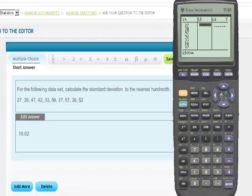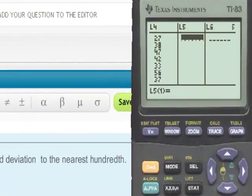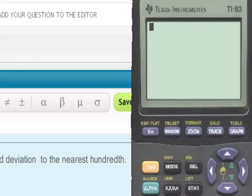We'll go to the STAT enter keys to bring us to the list editor. I put these values for our data set into list 4. Now going to the second button and quit, we'll go to our home screen.